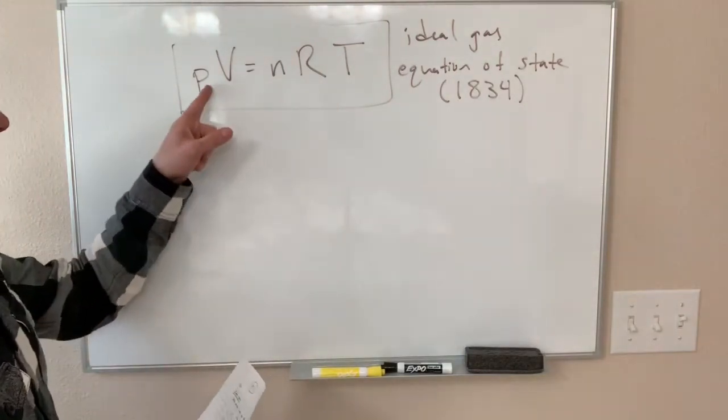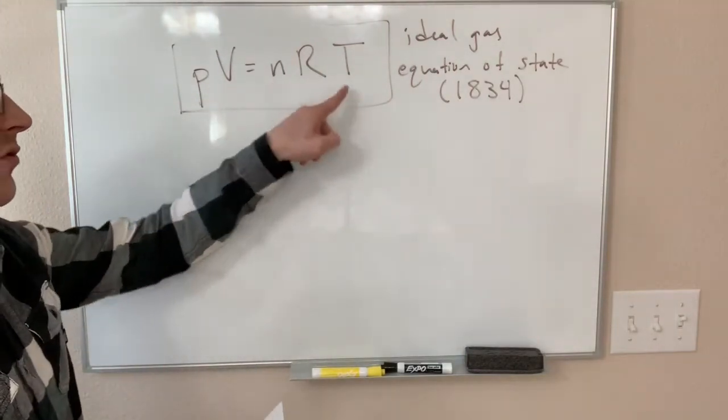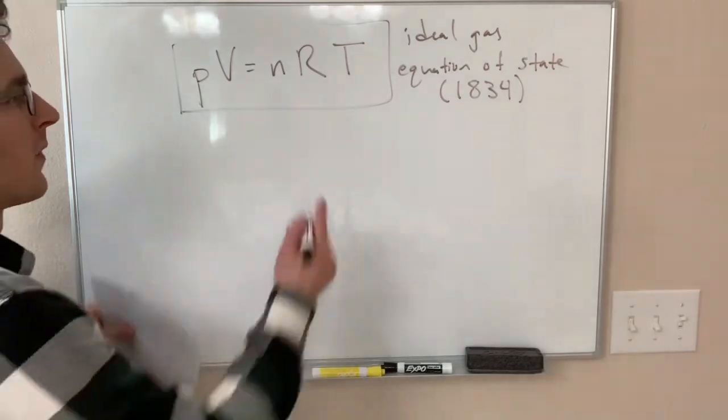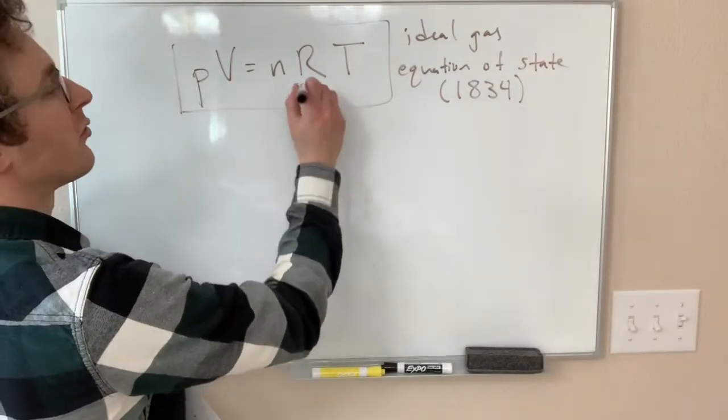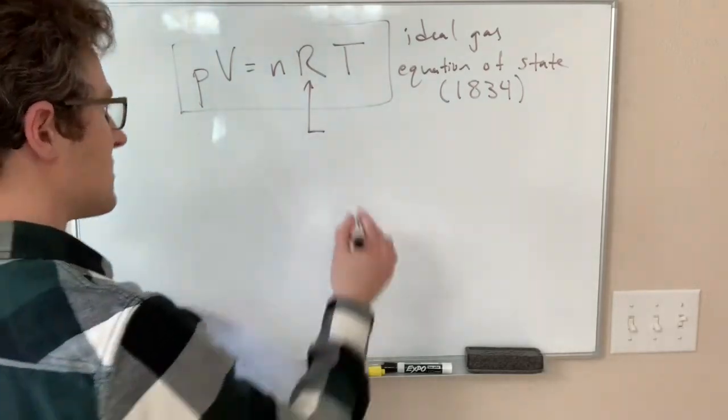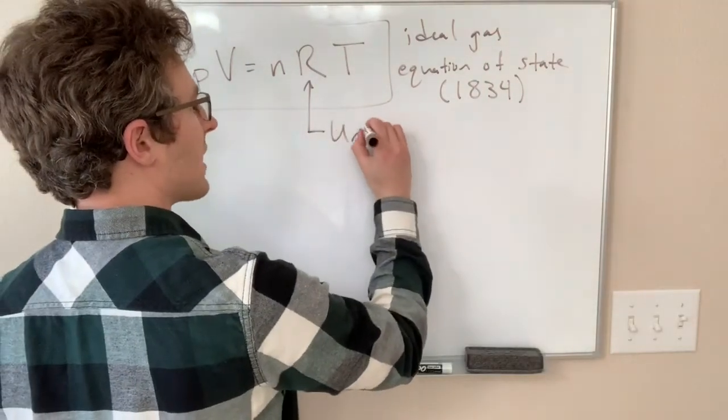This tells us the relationship between the pressure, the volume, the amount of stuff, and the temperature. The only unfamiliar piece here is this capital R, the universal gas constant.